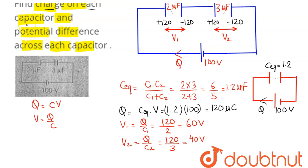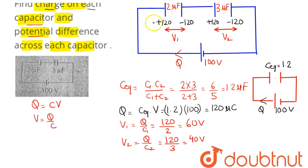To summarize: the charge on each capacitor is 120 microcoulombs. The potential difference across the 2 microfarad capacitor is 60 volts and across the 3 microfarad capacitor is 40 volts. Hence this is our answer.